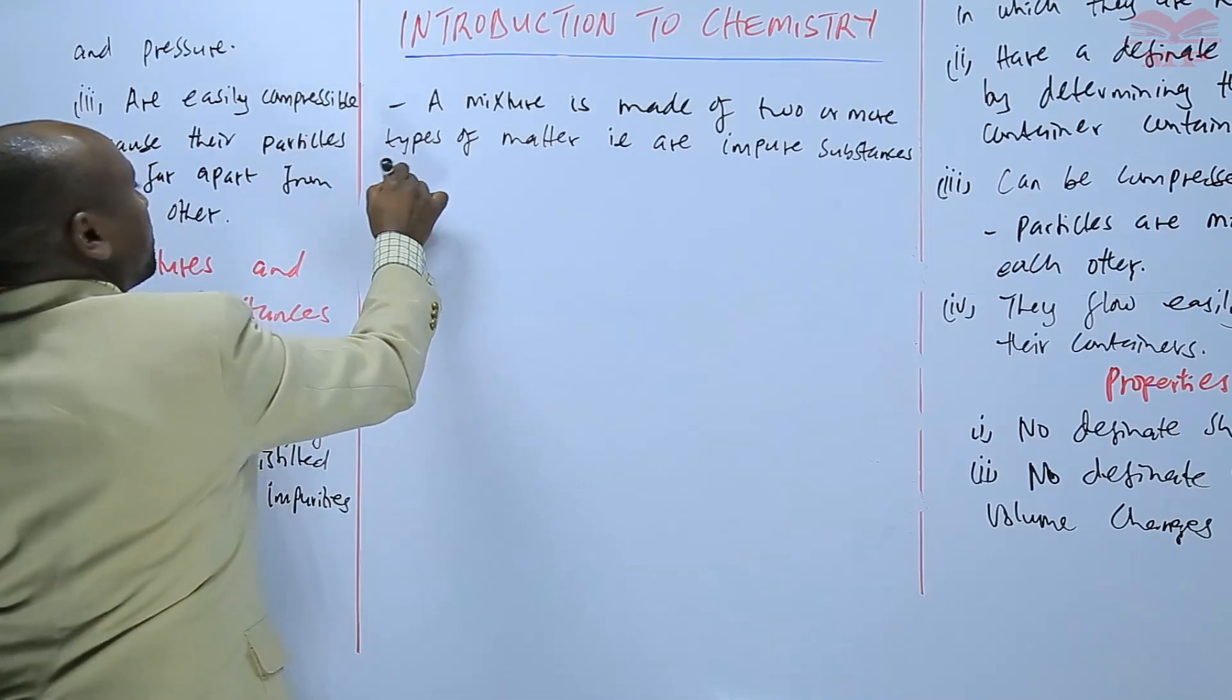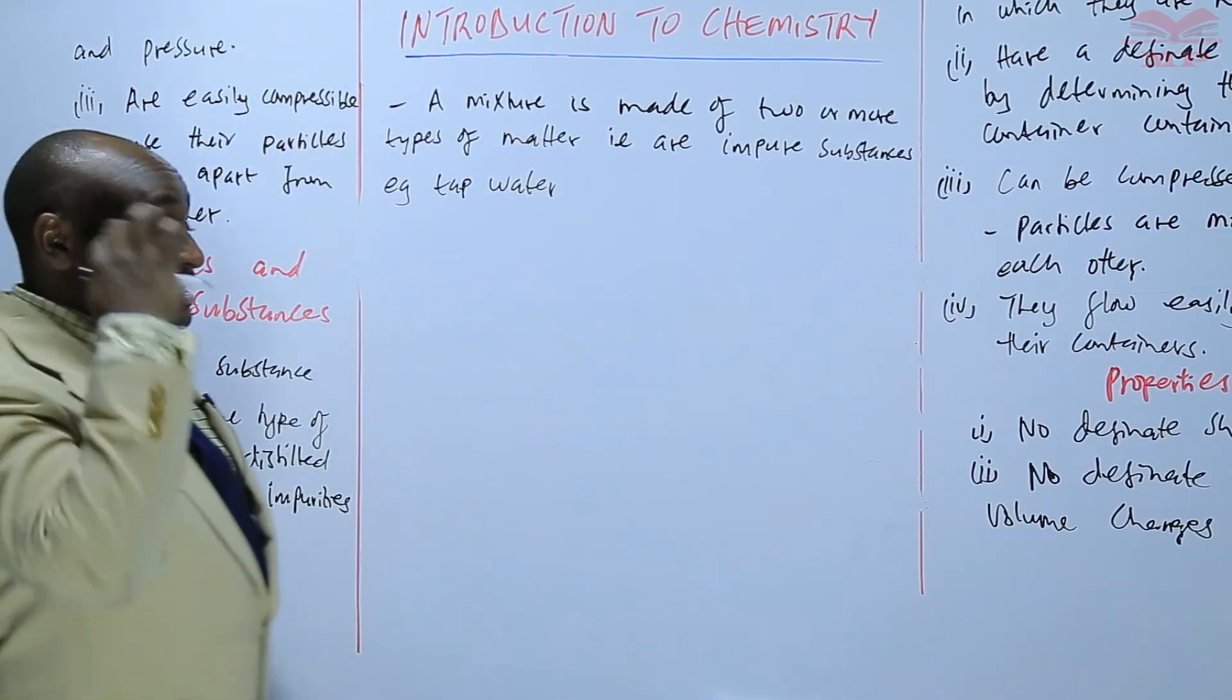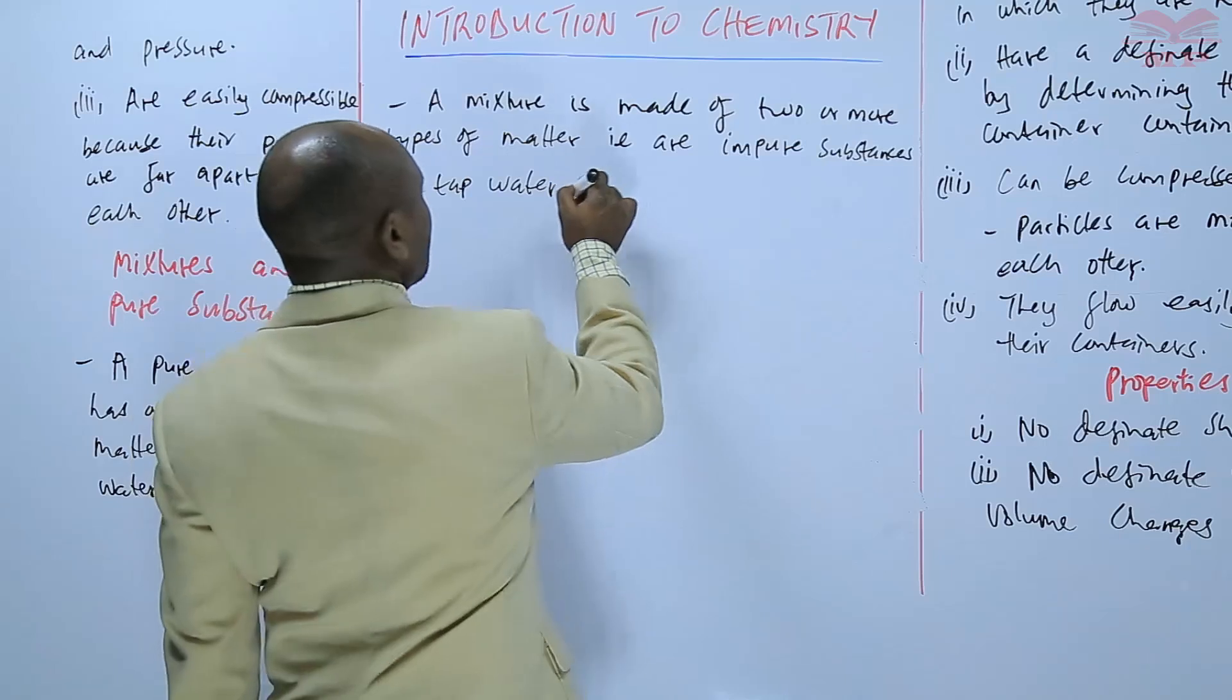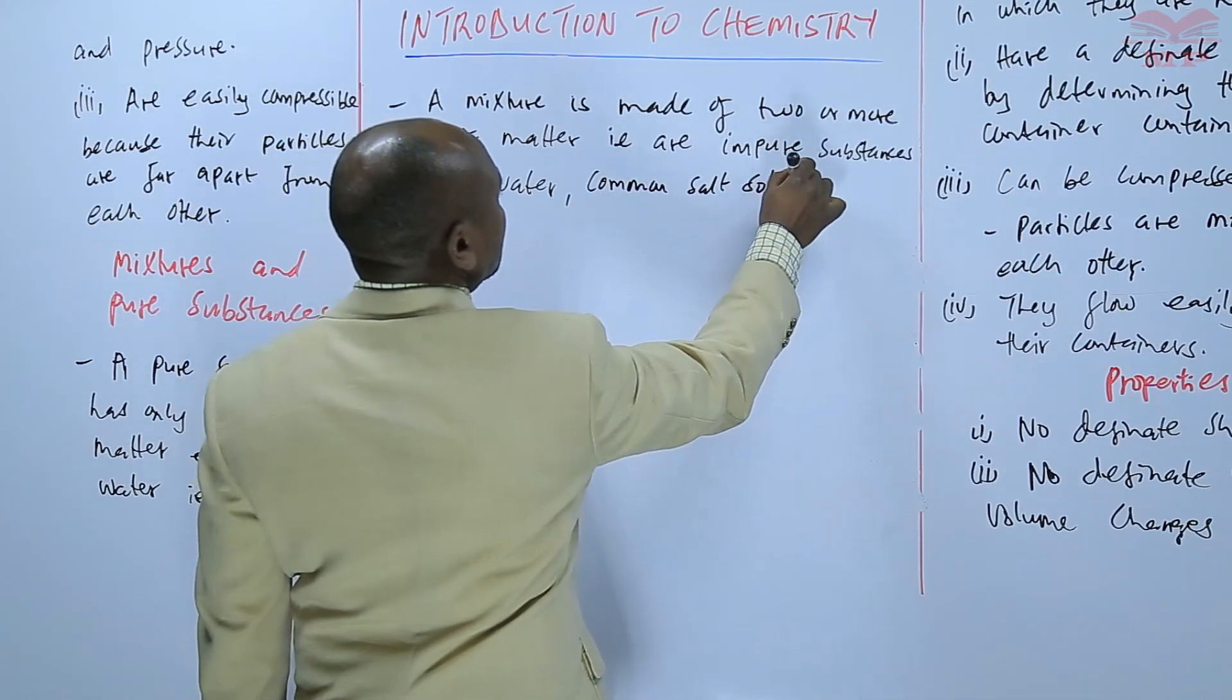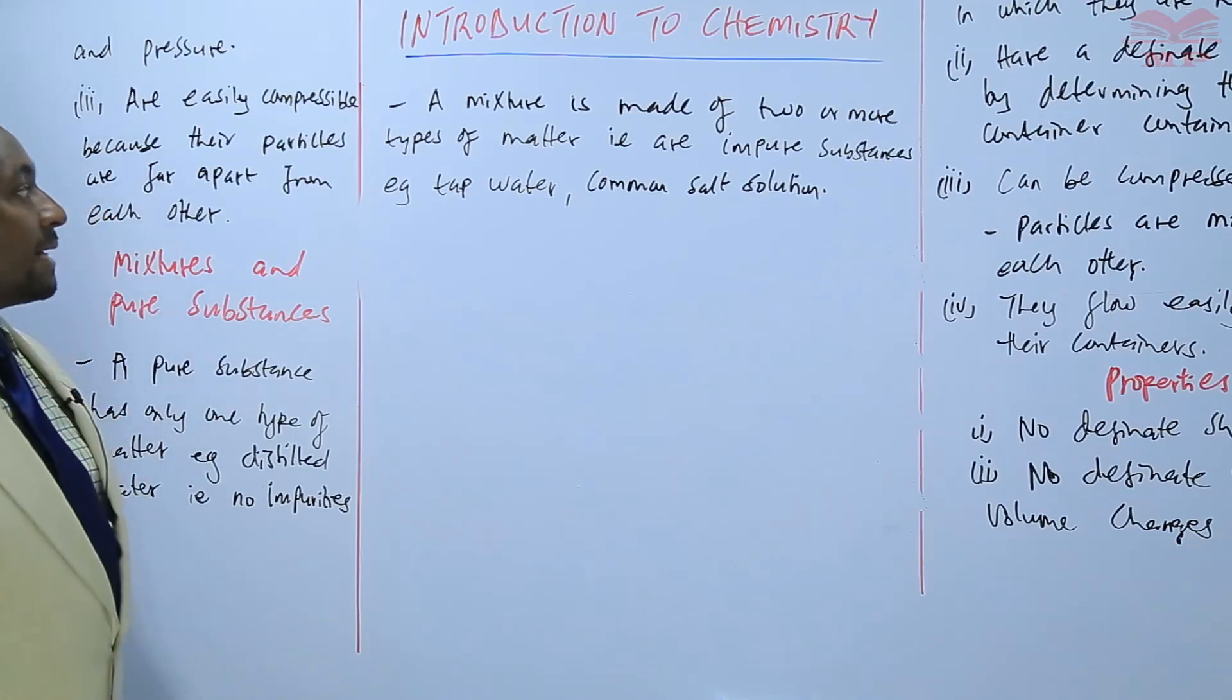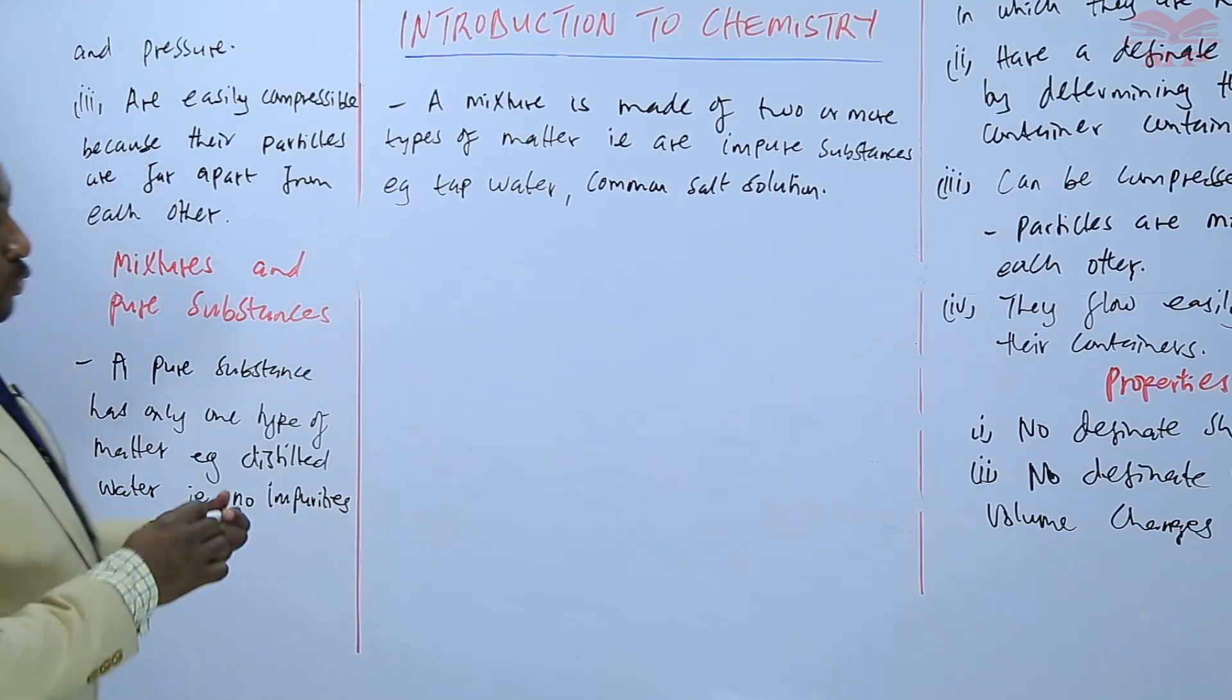We can have an example, for example, tap water. Tap water is not pure because it contains some dissolved substances, maybe there are minerals that are dissolved there and so on. We can also have something like common salt solution. That also is an example of a mixture. So any substance that has two or more types or kinds of matter is said to be a mixture or is said to be an impure substance.